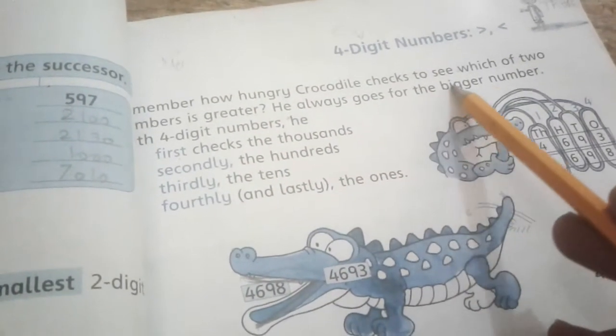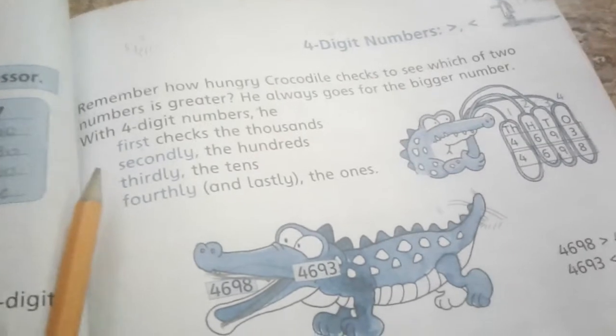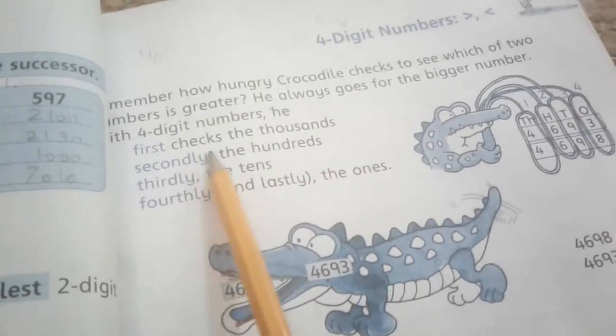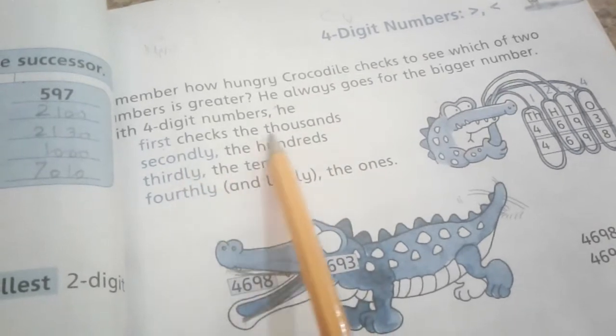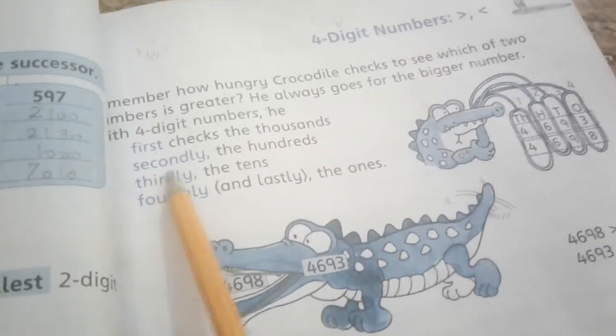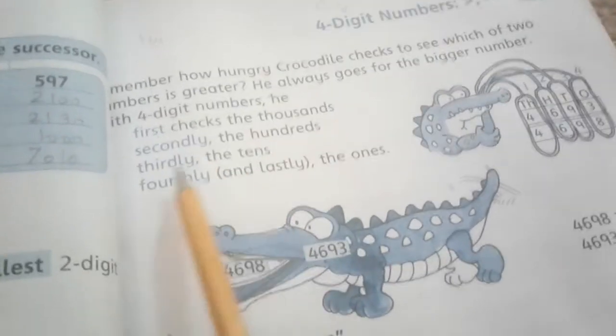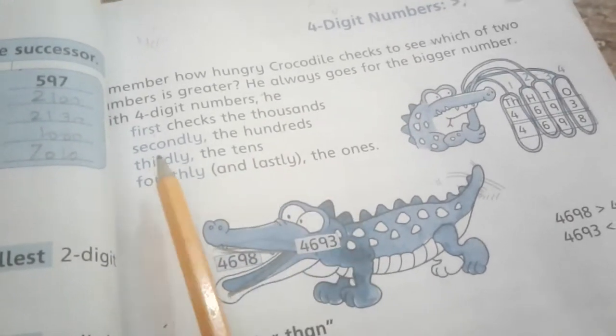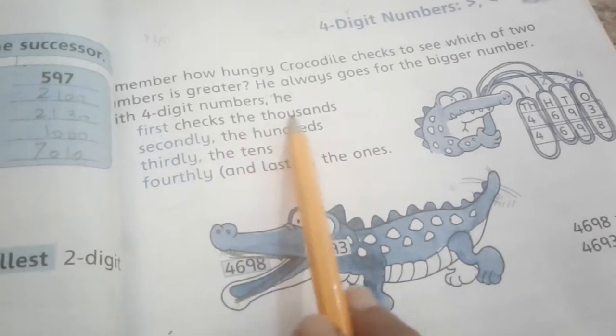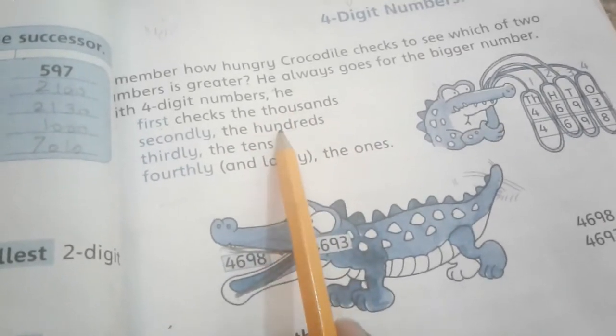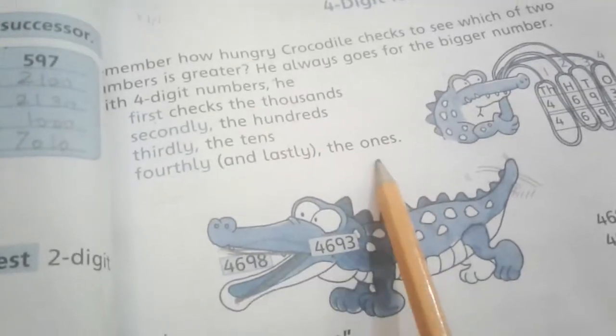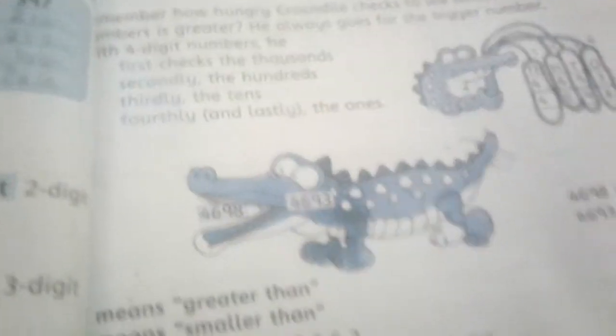He always goes for the bigger number. With four digit numbers, he first checks the thousands, then he checks the hundreds, thirdly the tens, fourthly the ones. First you have to check which number is thousand, then hundred number check, then ten check, then one check.